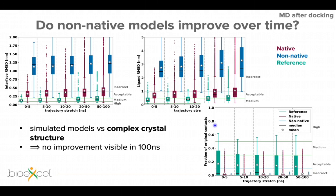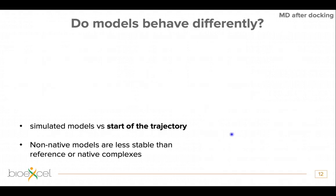Another plot shows the fraction of original contacts. Even the reference simulations lose many original contacts compared to the crystal structure — up to about 70% on average — because of minimization, equilibration, and the fact that these intermolecular contacts are defined rather strictly at only 5 ångströms, which can be violated rather easily.